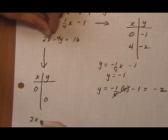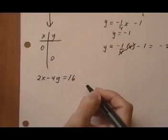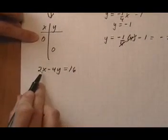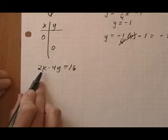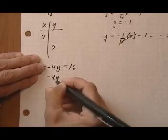So 2x minus 4y equals 16. And I decided to put in x is 0. If we put x is 0 here, the x term goes away because the whole thing goes to 0. We get minus 4y equals 16.